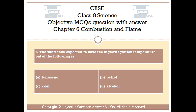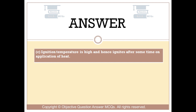Question number 8: The substance expected to have the highest ignition temperature out of the following is — Option A: kerosene. Option B: petrol. Option C: coal. Option D: alcohol. The right answer is Option C. Coal has a high ignition temperature and hence ignites after some time on application of heat.